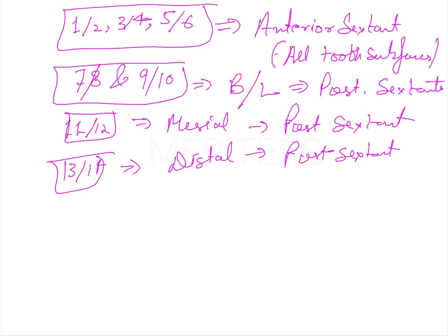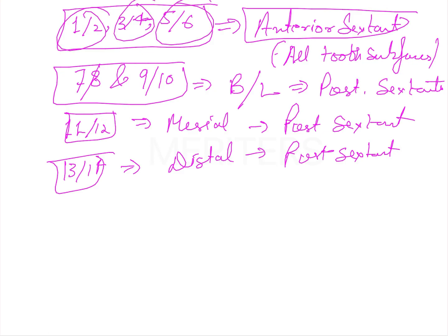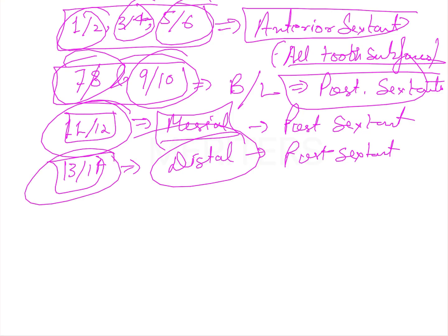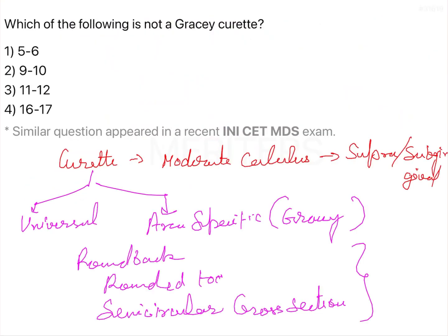To recap: the anterior sextant uses 1, 2, 3, 4, 5, and 6 for all surfaces. Buccal and lingual of the posterior segment uses 7, 8, 9, and 10. The mesial aspect of the posterior sextant uses 11 and 12, and the distal aspect of the posterior sextant uses 13 and 14. That is easy to remember.